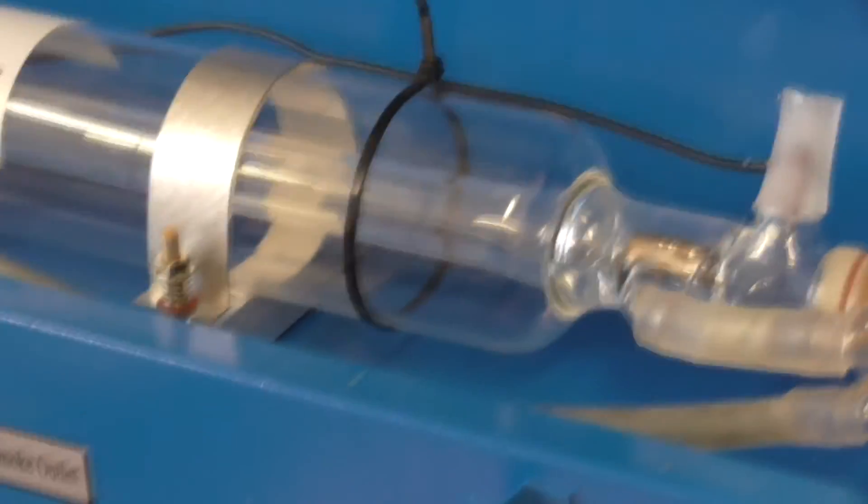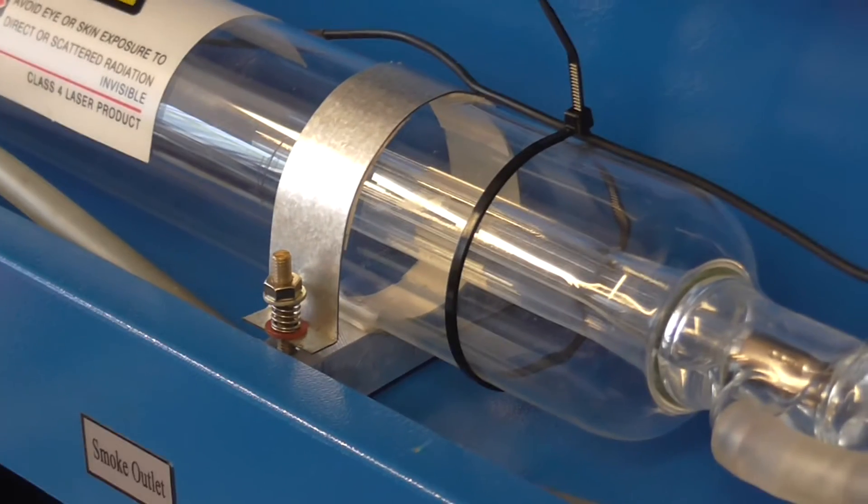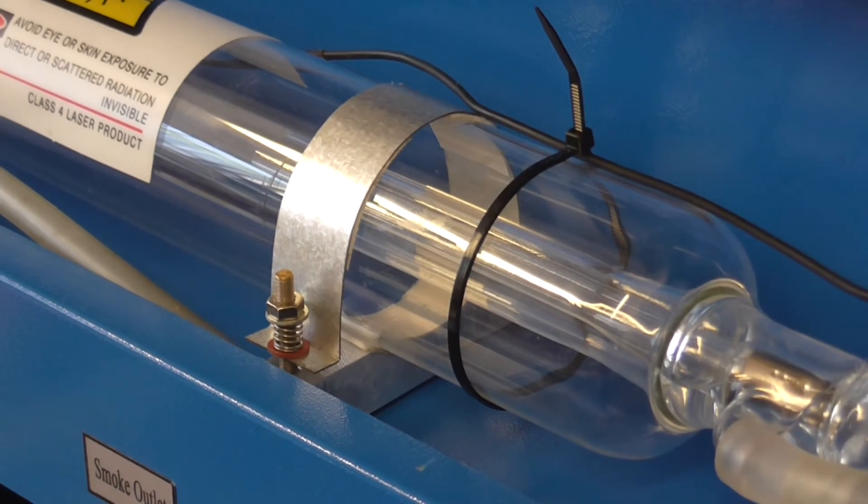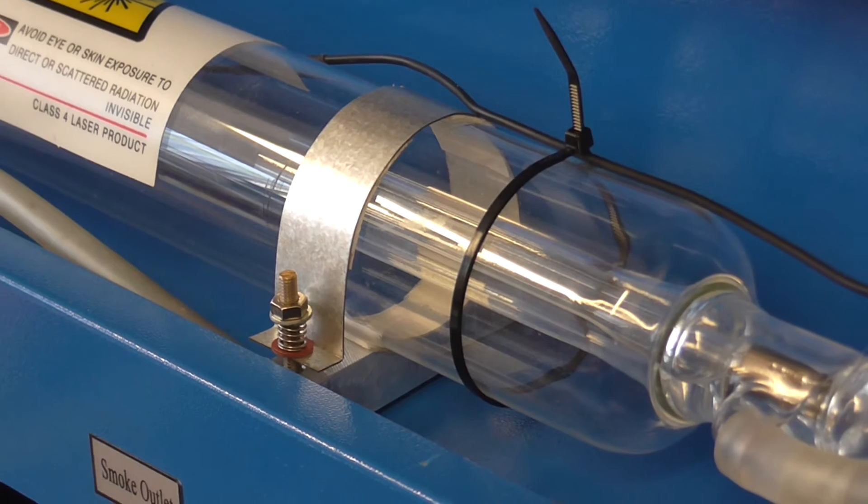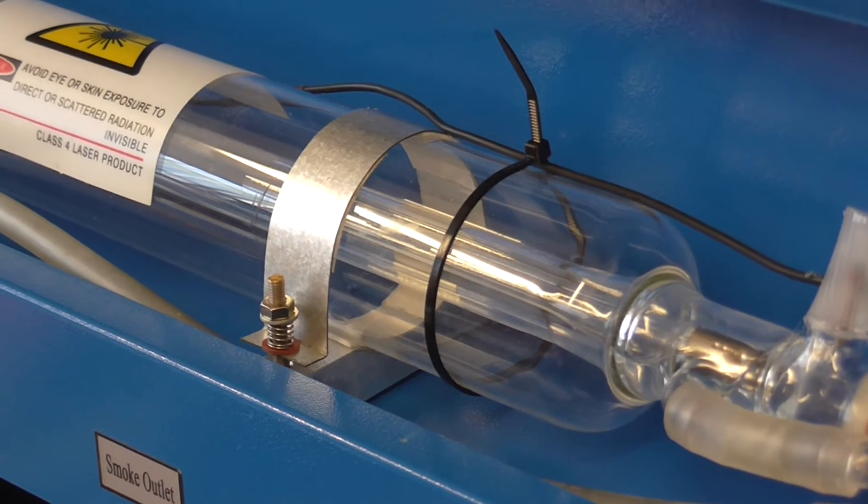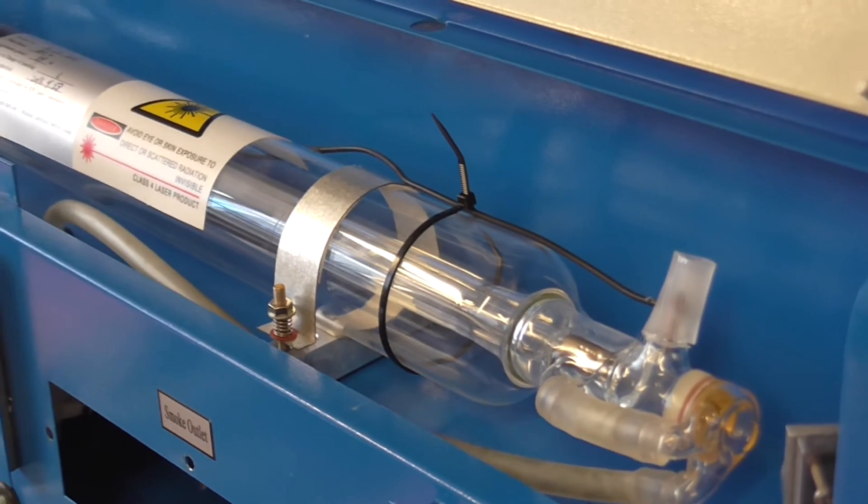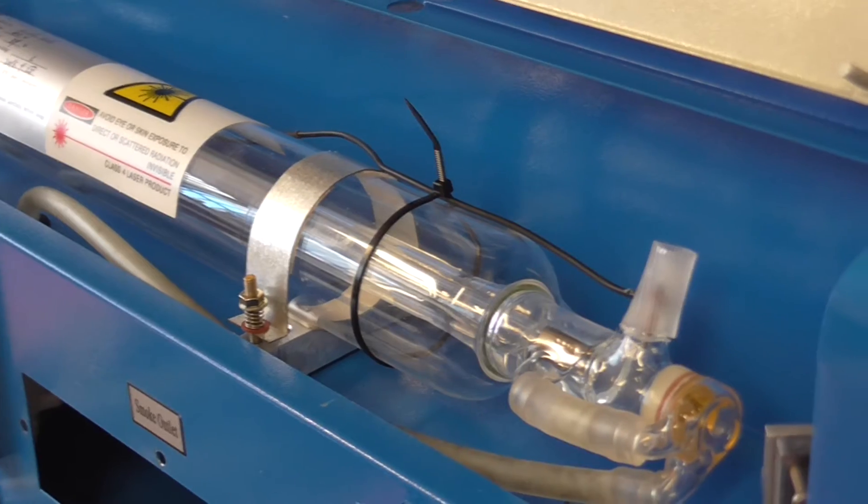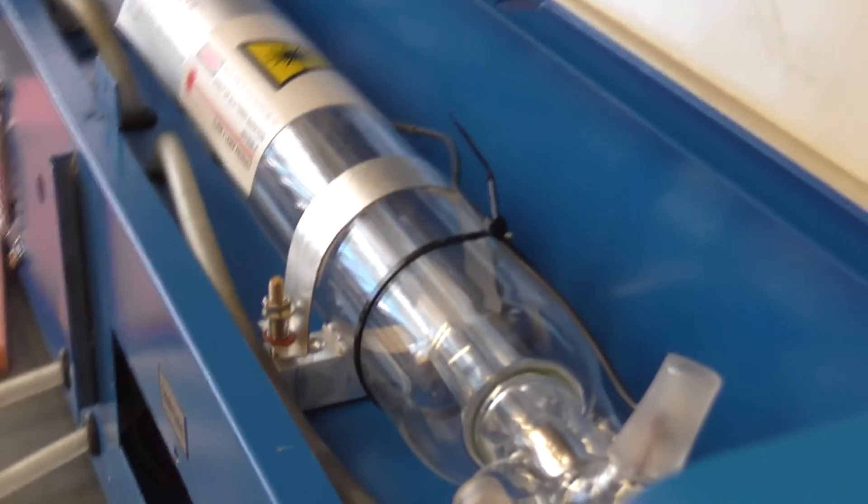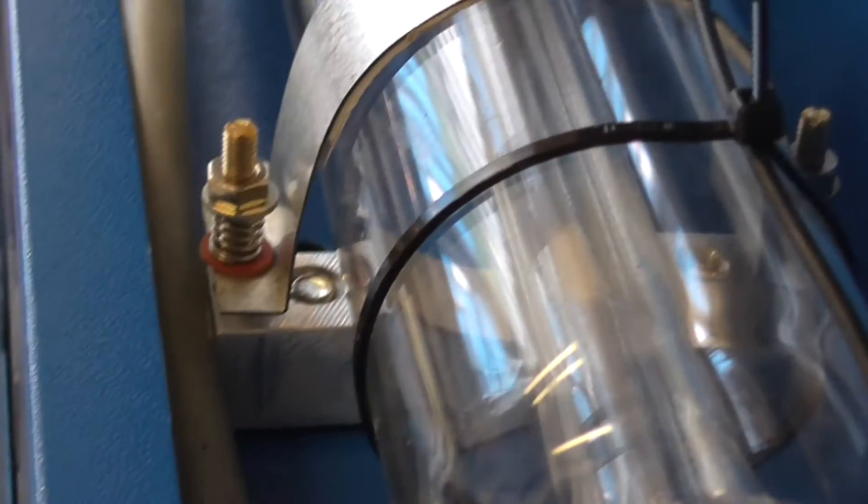Various people have done tube holders that can be downloaded off Thingiverse and 3D printed. I looked at a couple of them and none of them actually fitted this particular model. So what I've ended up doing is using the original aluminium block.